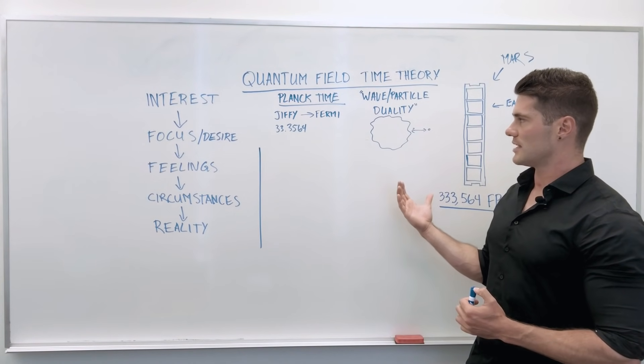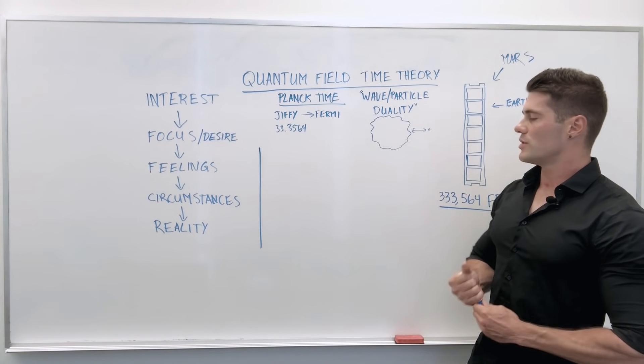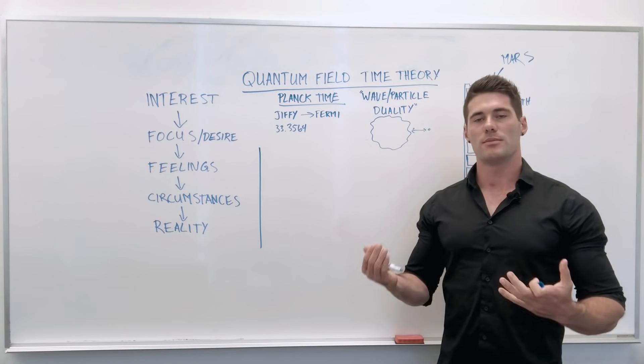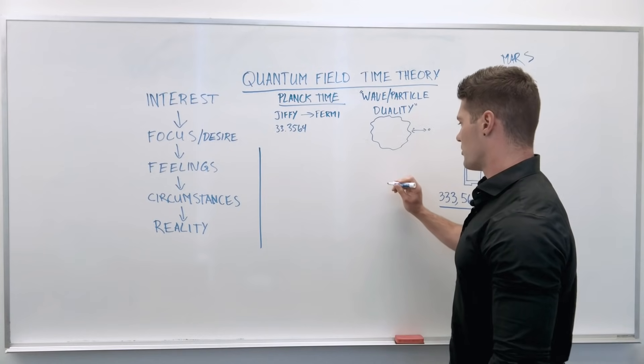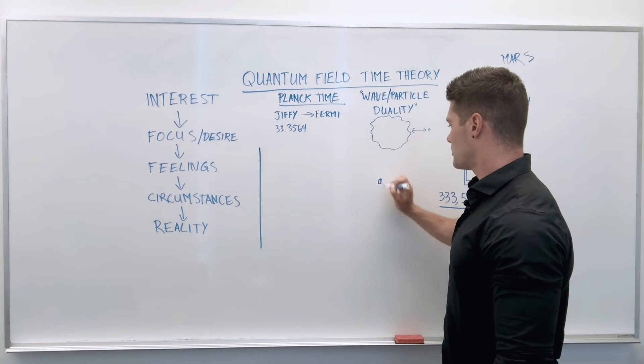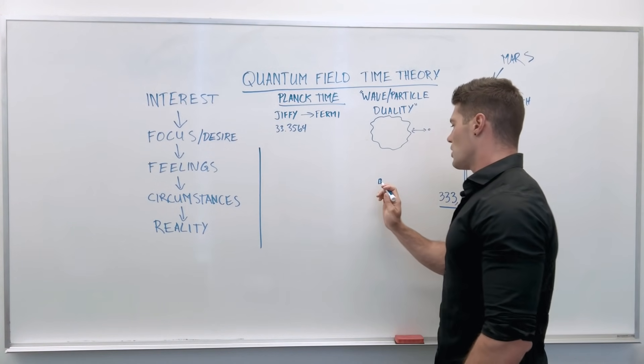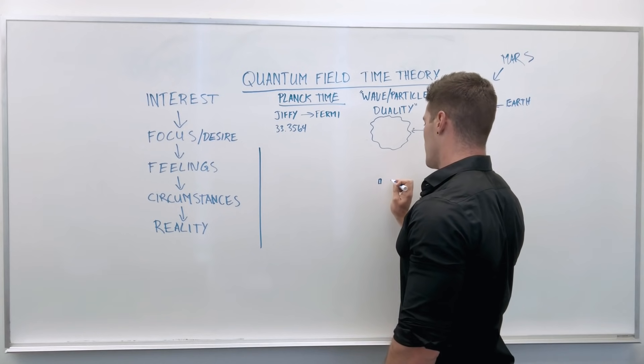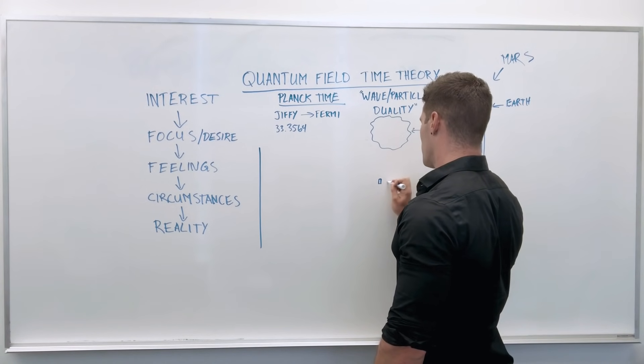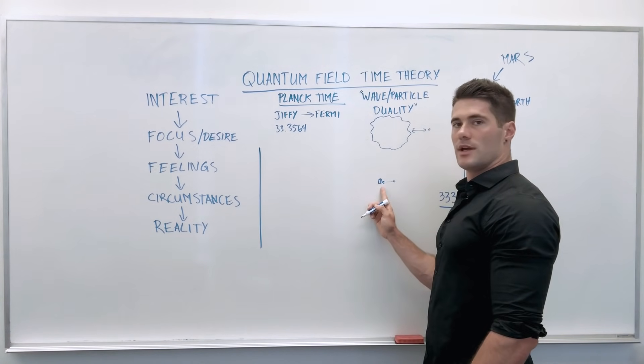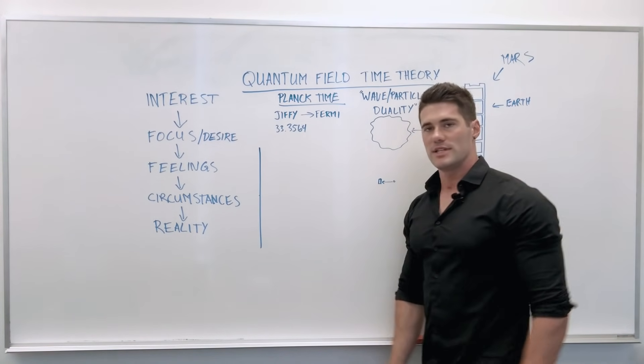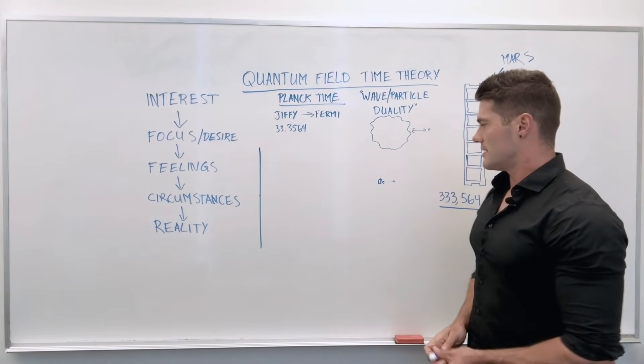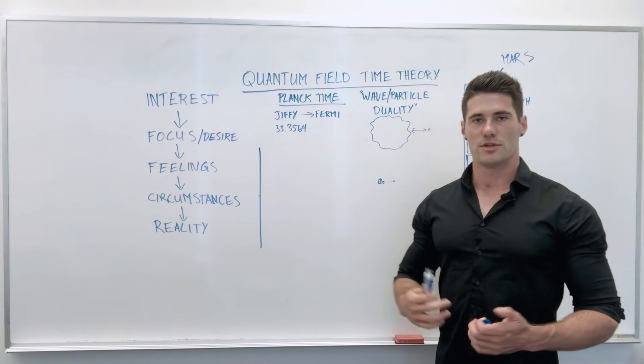We look at the quantum physics model called the double slit experiment. Most of you are probably familiar with this experiment. When physicists shoot a particle through a slit and they are observing it, it will always hit the wall at one particular location. This happens every single time they observe the particle.